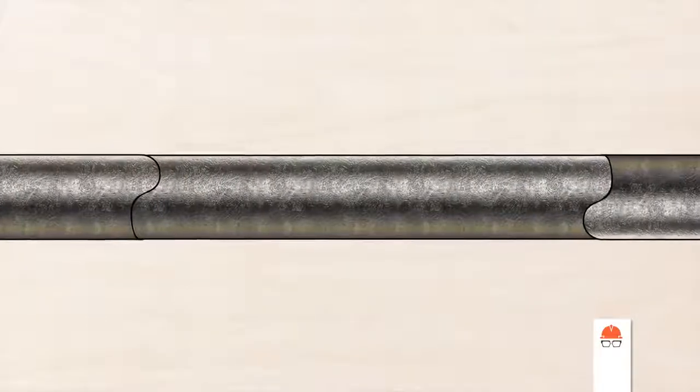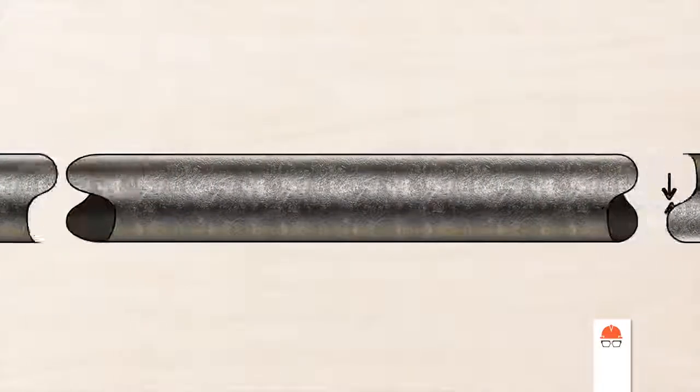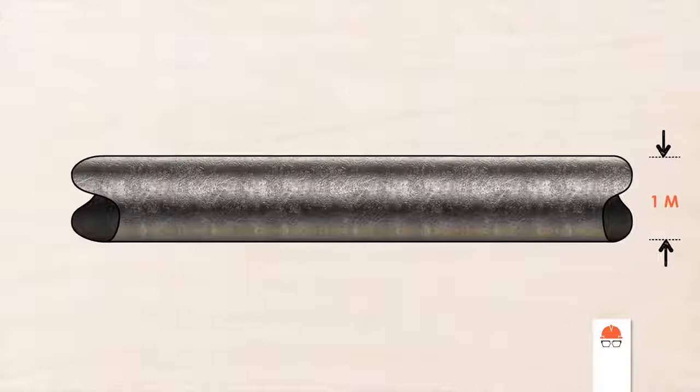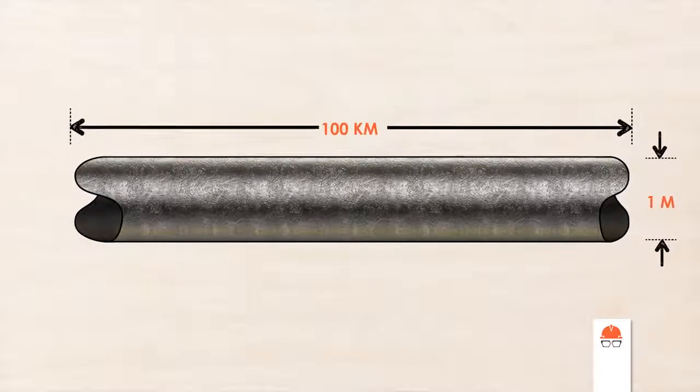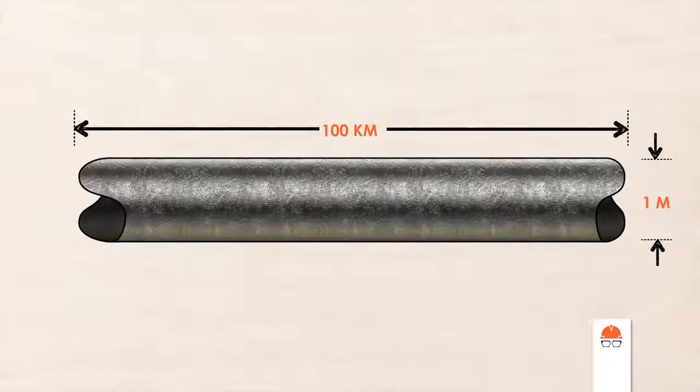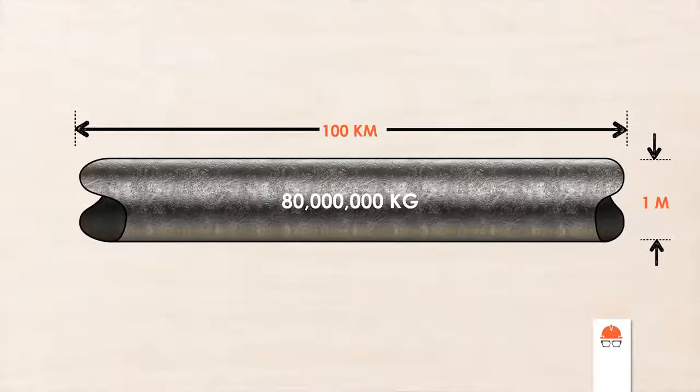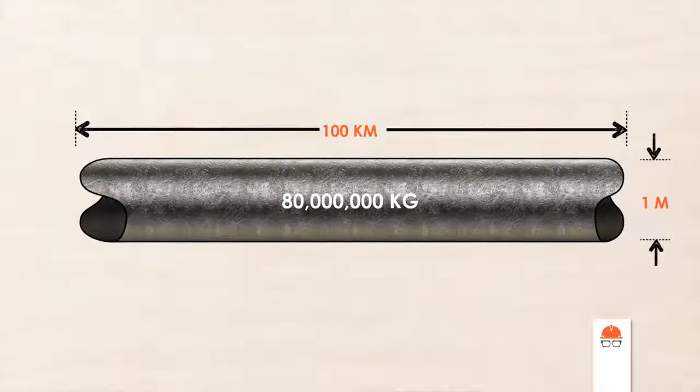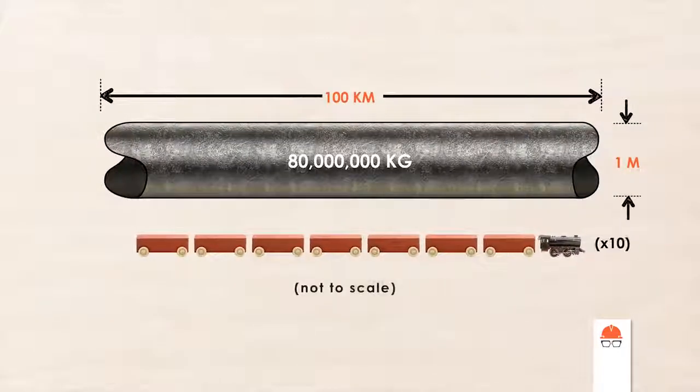Let's do a quick calculation. If you have a pipeline carrying water that is 1 meter in diameter and runs for 100 kilometers, a fairly average-sized pipeline, the mass of water in the pipe is about 80 million kilograms. That's a lot of kilograms. In fact, it's the equivalent of about 10 freight trains.